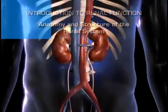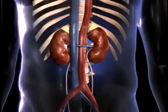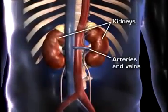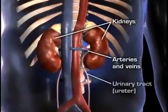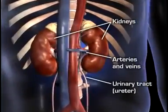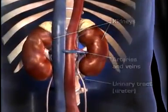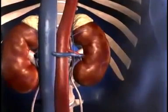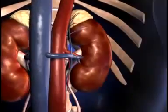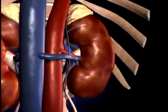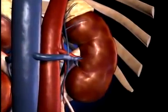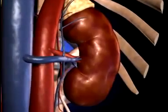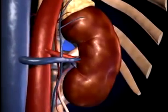The renal system consists of the kidneys, the connecting arteries and veins, and the urinary tract. The kidneys are paired, bean-shaped organs lying outside the peritoneal cavity in the back of the upper abdomen, one on each side of the vertebral column.